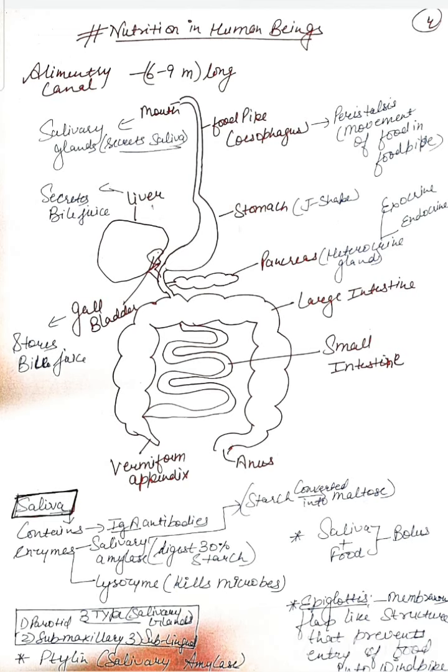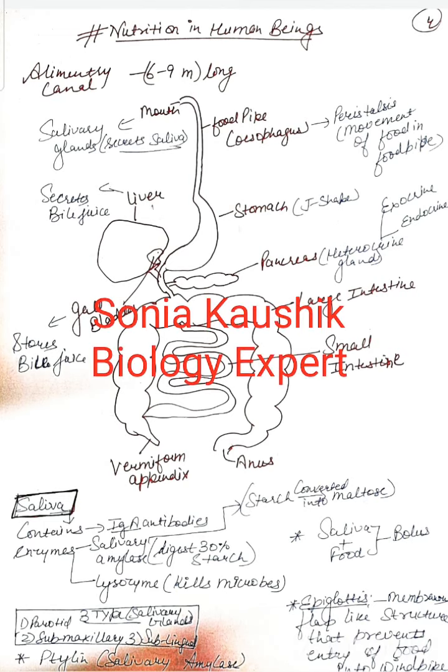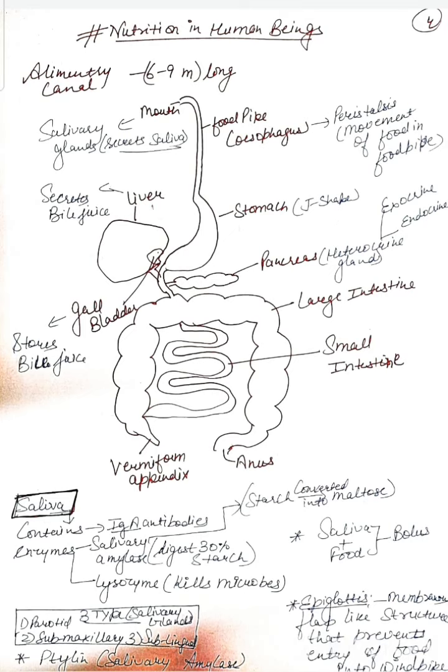In this video we are going to discuss alimentary canal. The alimentary canal is basically 6-9 meters long and it starts from mouth and ends at anus. Mouth has salivary glands that secrete saliva and then leads to food pipe that is also called esophagus. The movement of food in esophagus is called peristalsis and then it leads to stomach.